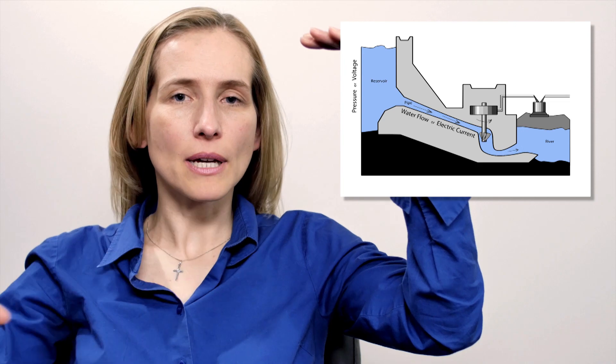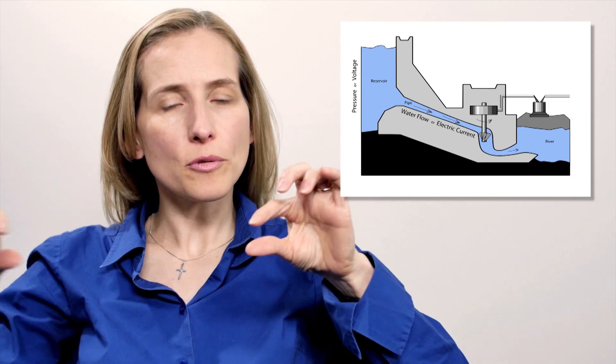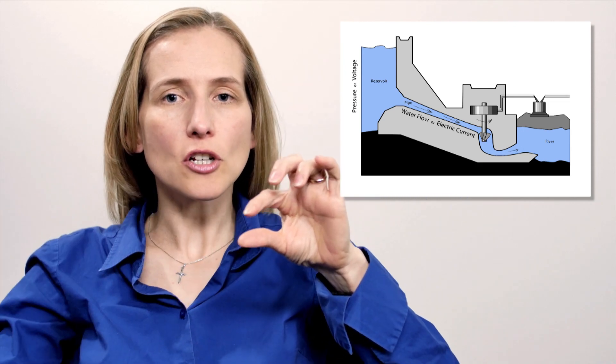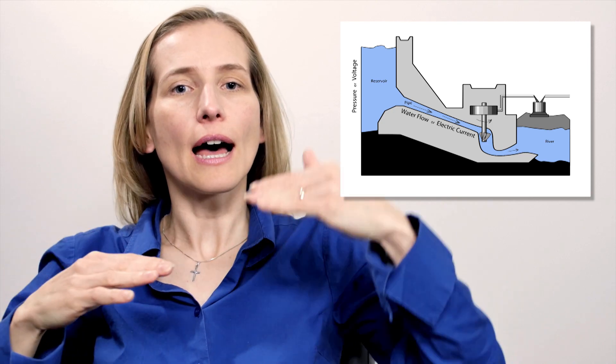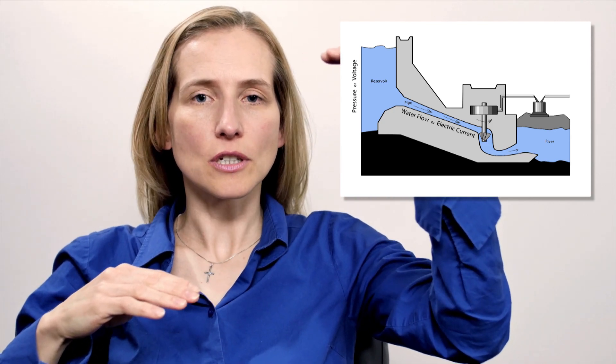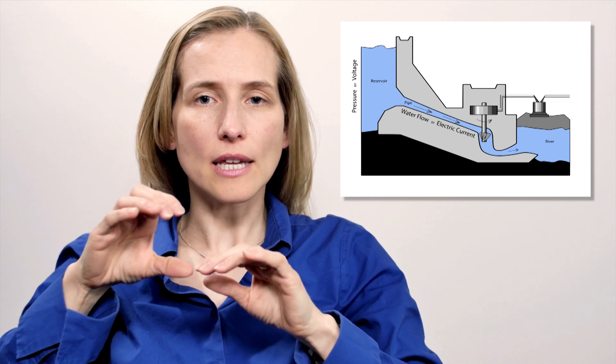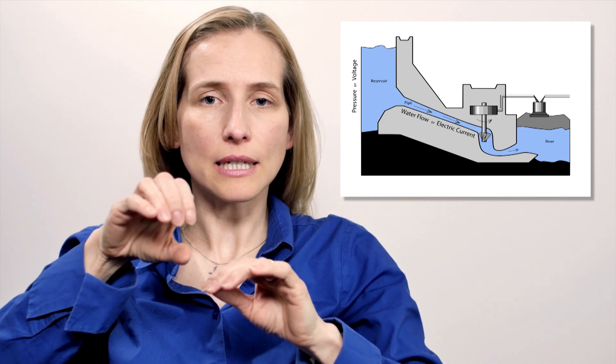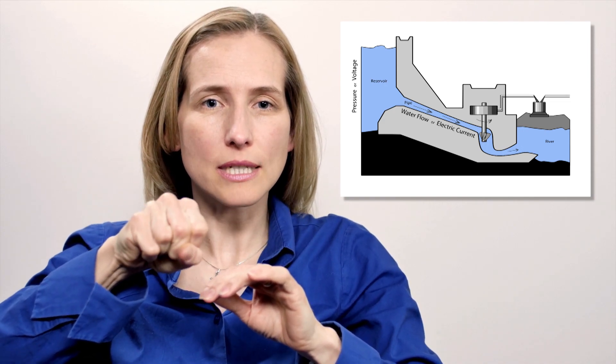Another way of understanding electricity is to look at an analogy. Picture a reservoir of water and a pipe coming out of it. The flow through that pipe is the same as the current in a wire. The height of the water in that reservoir is like the voltage. And the resistance is the cross-sectional area of that pipe — as it gets smaller, it gets more and more resisted. So if you want to increase the water flow, you can increase the height of that water, increasing the voltage, or you can get a bigger pipe diameter to lower the resistance.